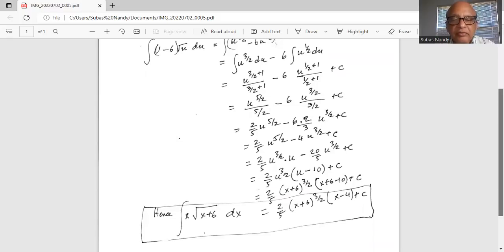Finally, we get the expression for the integration of x times square root of x plus 6 dx as 2 fifth x plus 6 to the 3 over 2 exponent multiplied by x minus 4 plus c.